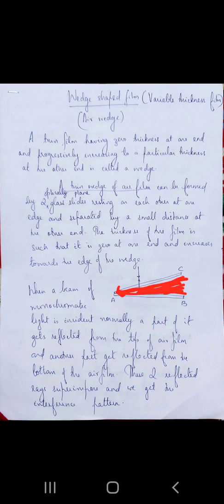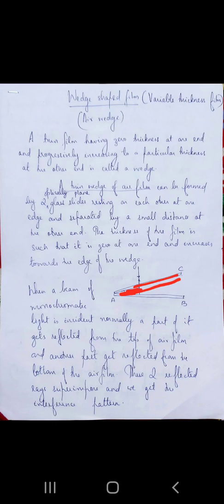You take two glass plates such that they are joined at one end, maybe by means of a rubber band, and at the other end they are kept separated by a small distance — maybe you insert a wire between the two glass plates. So between the two glass plates you get an air film whose thickness is zero at the point of contact of the glass plates and goes on increasing towards the edge of the wedge. Such an air film is called an air wedge.